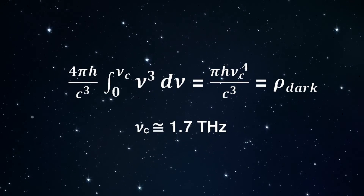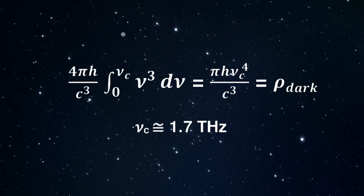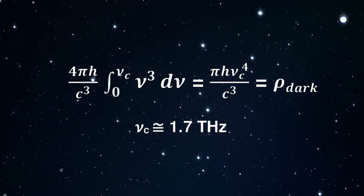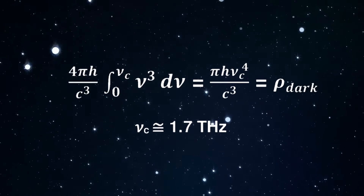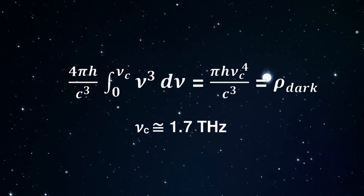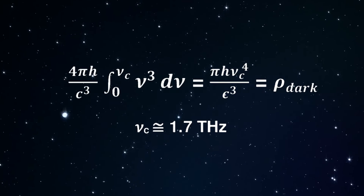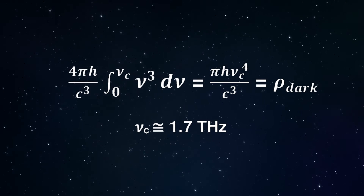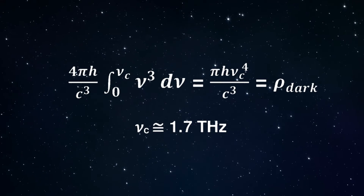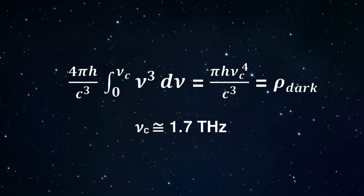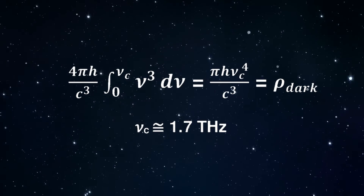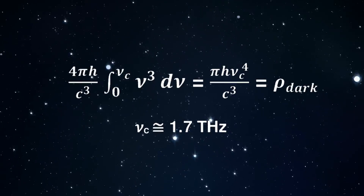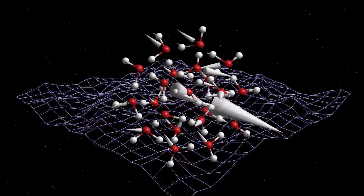For the prominent pentagonal dodecahedral water nanocluster, the cutoff vibrational frequency is approximately 1.7 terahertz. This formula produces the correct, small dark energy density and consequently the small cosmological constant. To summarize visually.